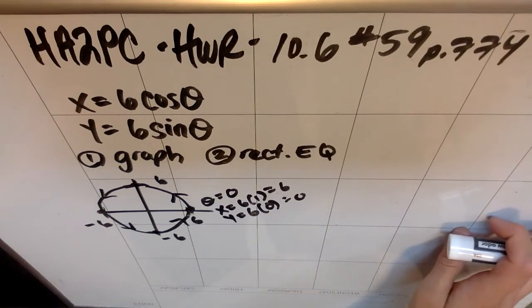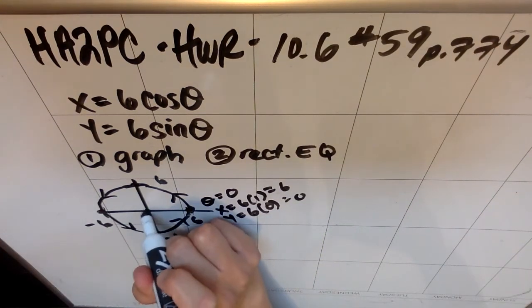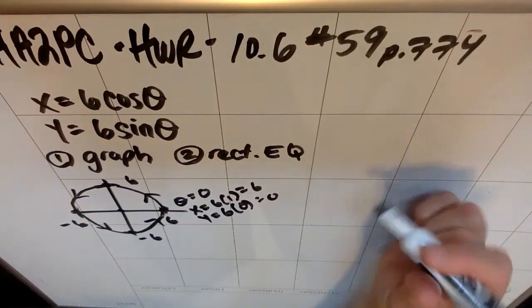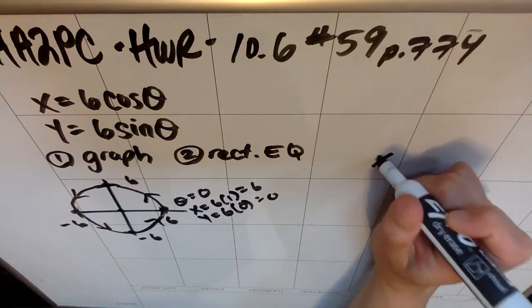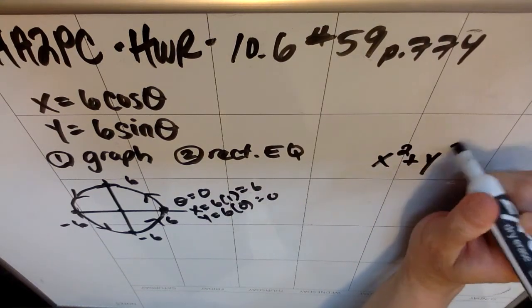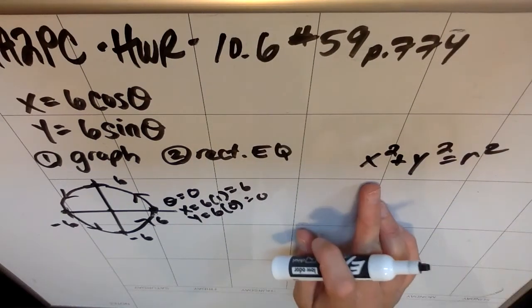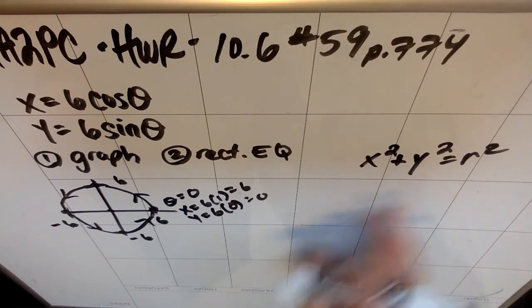Now knowing that this is a circle with center zero zero and radius six also helps me write the rectangular equation, because I know that the equation of a circle centered at zero zero is x squared plus y squared equals r squared. So I could kind of cheat and just be like, so this should be x squared plus y squared equals 36, because the radius is six.